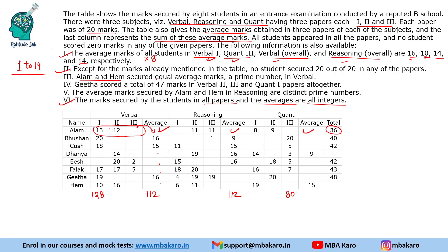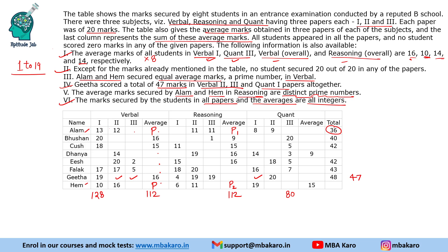Alam and Hame secured equal average marks - a prime number - in Verbal, so let us call it P. Gita scored a total of 47 marks in Verbal 2, Verbal 3, and Quant 1 papers altogether. Apart from this, the average marks secured by Alam and Hame in Reasoning are distinct prime numbers, let us say P1 and P2 respectively. This is the entire data given to us.